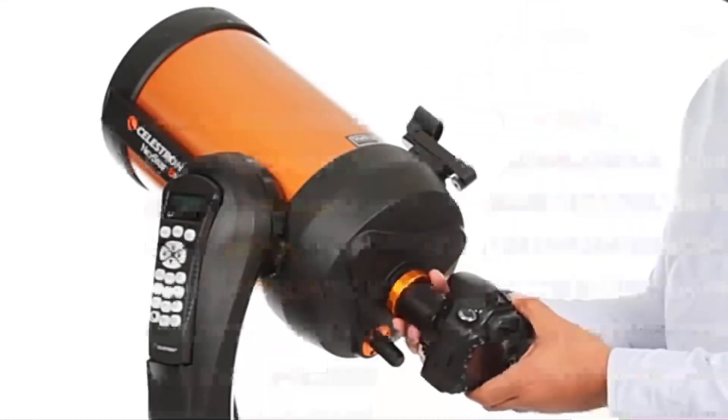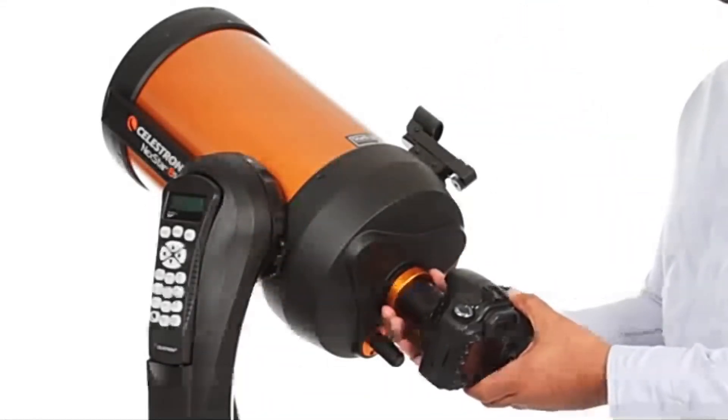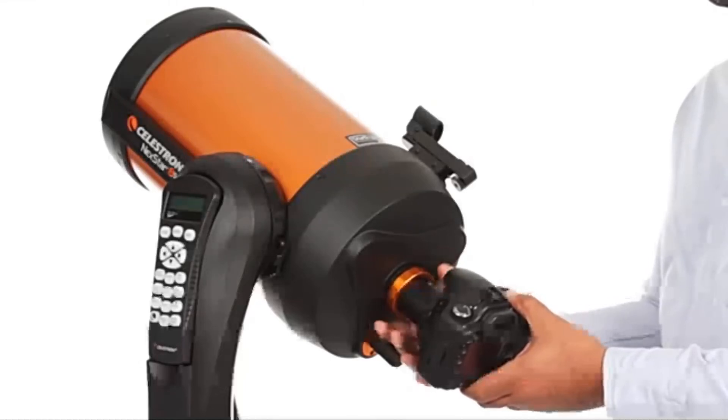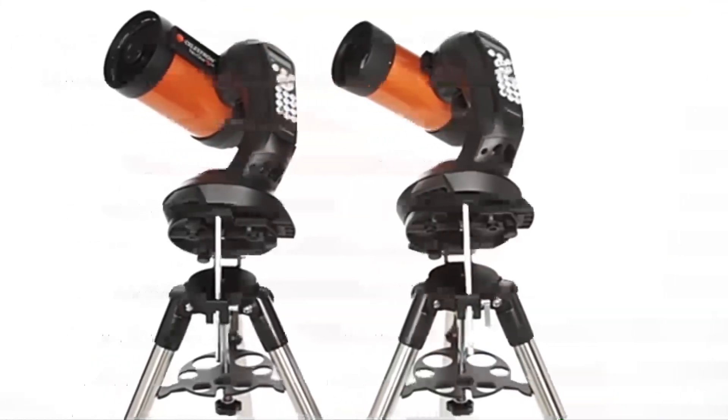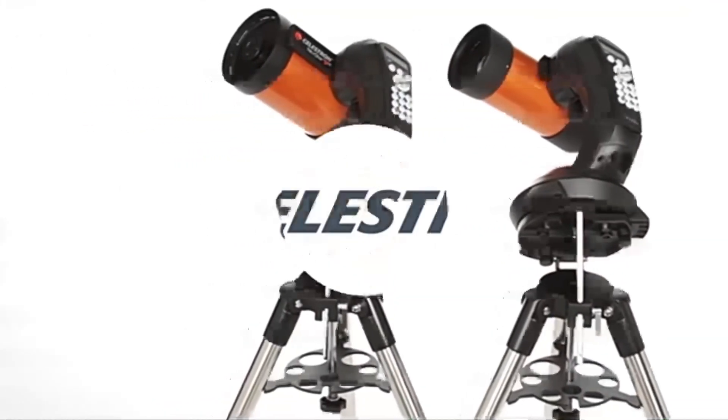You can even get started in astro-imaging with your Nexstar SE. Just attach any Celestron planetary camera or your DSLR. The 4 and 5-inch models also include a wedge for long exposure photography.